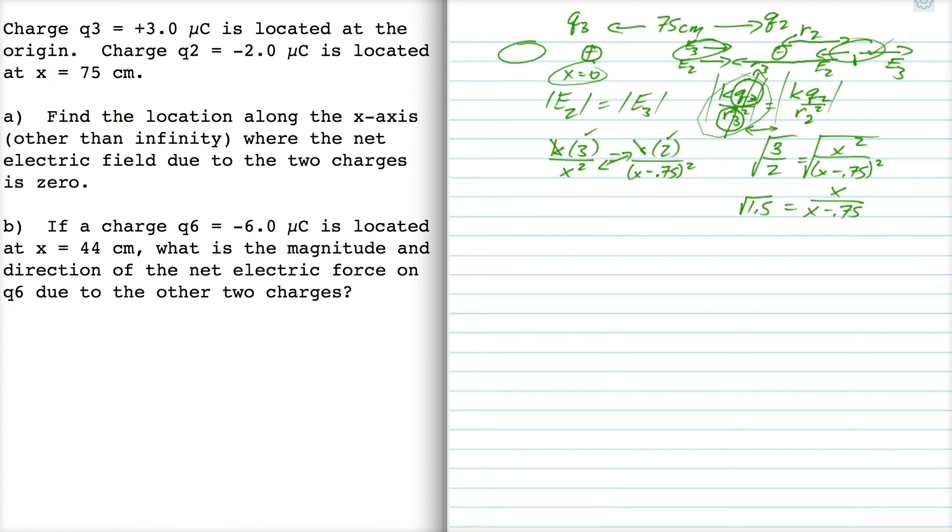And now I cross multiply again. I take 1.5 and I multiply it there, and I take the x and multiply it there. Doing that gives me, let's see, 1.22x minus .92 equals x, and from there, .22x is equal to .92. So x is 4.2 meters.